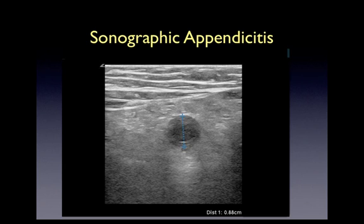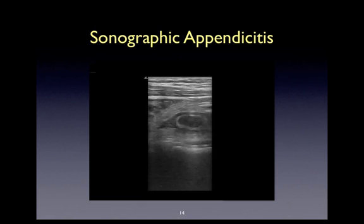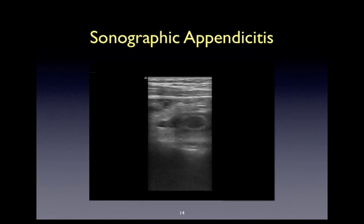In this example, we can clearly see a big, bright, targetoid structure, and what you'll also appreciate is a very subtle surrounding hyperechoic wall. This is yet another example of appendicitis. Here you can see a targetoid structure with a blind end — yet another example of appendicitis.